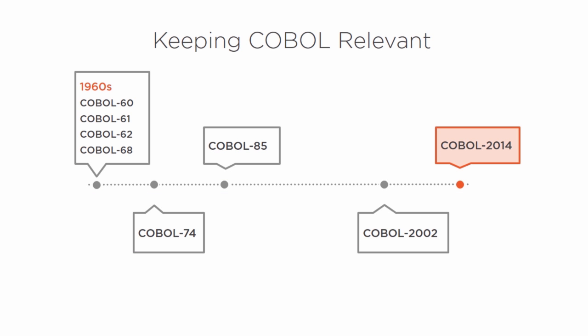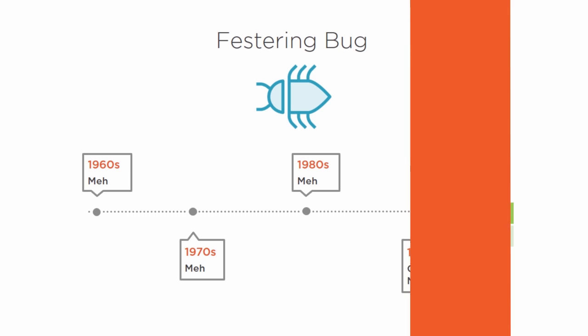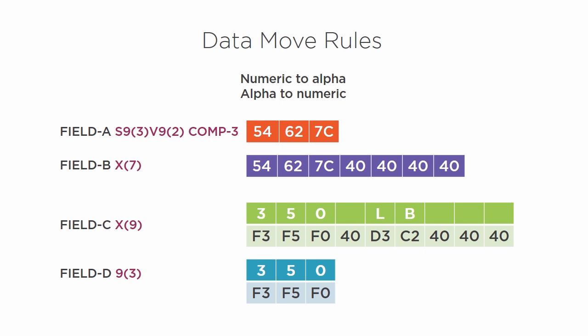There are an estimated 200 billion lines of COBOL code running systems across all four corners of the globe — so I'm confused as to how a globe has corners, but I digress. Further, an estimated 50 percent of current COBOL programmers are at or past retirement age, providing significant long-term employment opportunities for those entering the field.